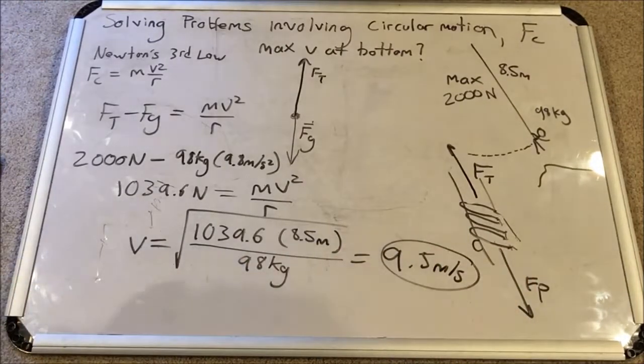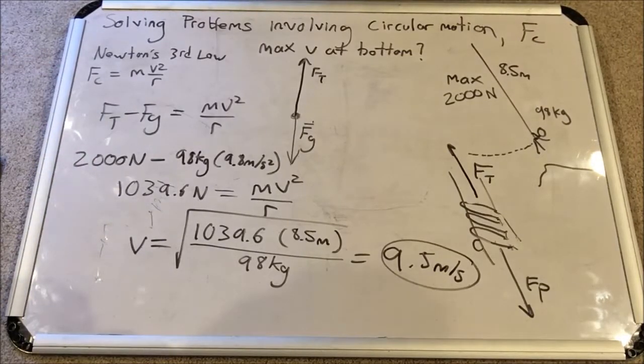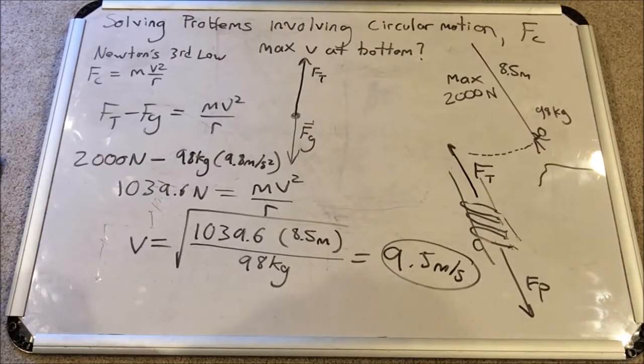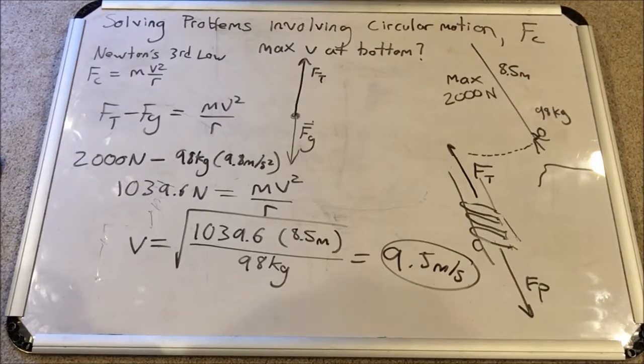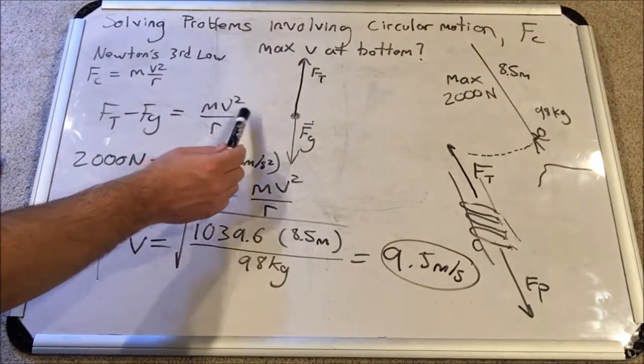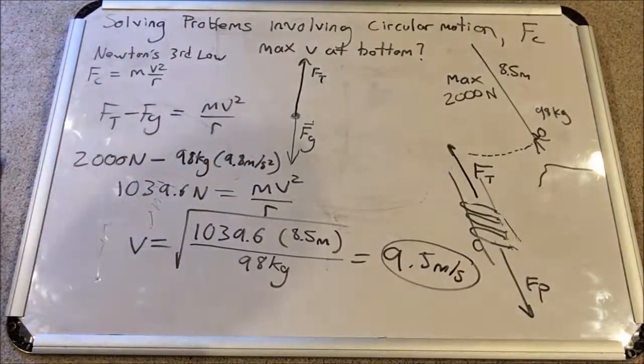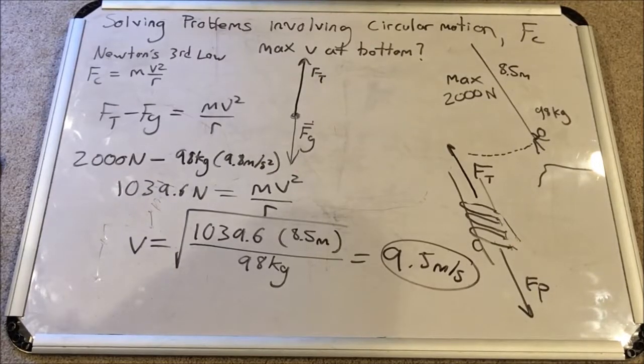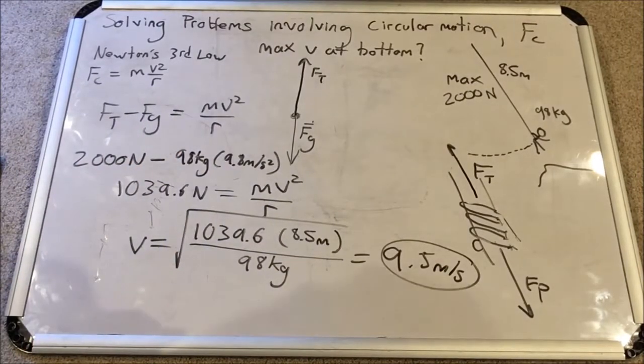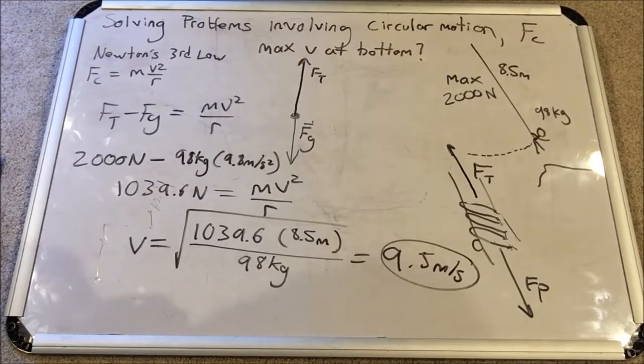So that's the maximum speed he can tolerate, assuming that we are maxing out our centripetal force. And this is quite a fast speed for someone swinging. If you think about that, that's 9.5 meters he's moving every second. If he moves faster than that, this V will go up, requiring a larger centripetal force. He would have to generate a larger tension force in order to meet the centripetal force required for that motion at that velocity. So that's why it says max V that he could tolerate with 2,000 newtons.